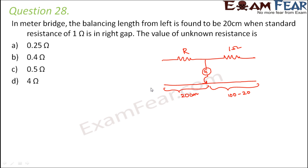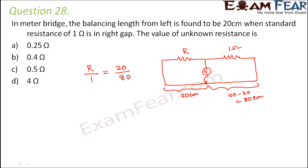This scale is 100 cm, so the right half would be 80 cm. Since this is the balancing length, the galvanometer doesn't show any deflection at this point, meaning the bridge is in the balanced condition. Therefore, R by 1 should be equal to 20 by 80. Therefore, R is equal to 20 by 80, which is equal to 1 by 4, that is 0.25 ohms.